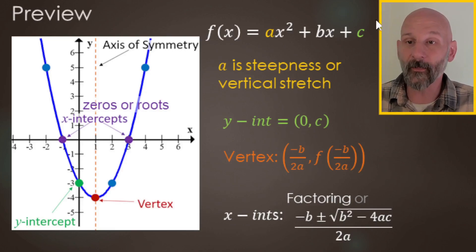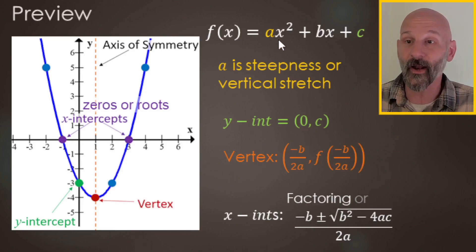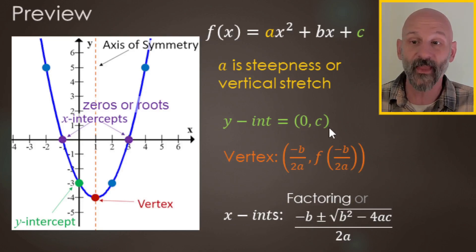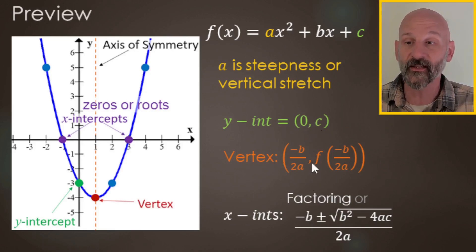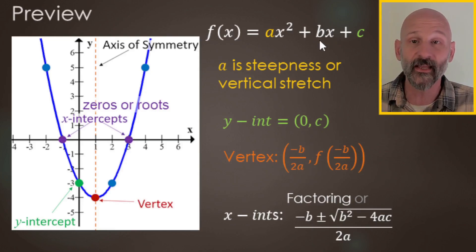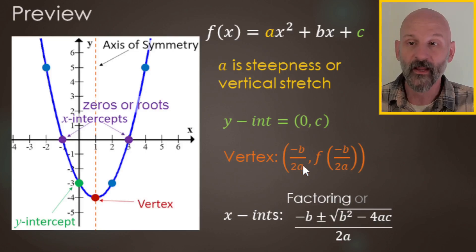The y-intercept is the value of c — a, b, c — c is your constant term, and that's going to be the value for your y-intercept. For the vertex, the formula is negative b over 2a. So negative whatever this b value is, over two times the a value.